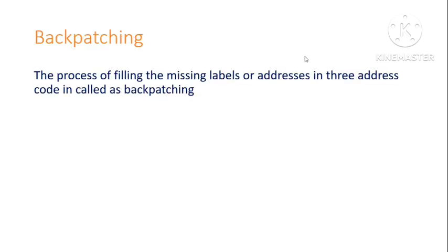Welcome to the video lecture series on principles of compiler design. In today's lecture we will be learning about the backpatching technique. In order to convert a high level language to an intermediate code or three address code, we are supposed to fill various addresses in gotos, jumps, or follows — these addresses are called labels. The mechanism to fill missing labels or addresses in three address code is called backpatching.